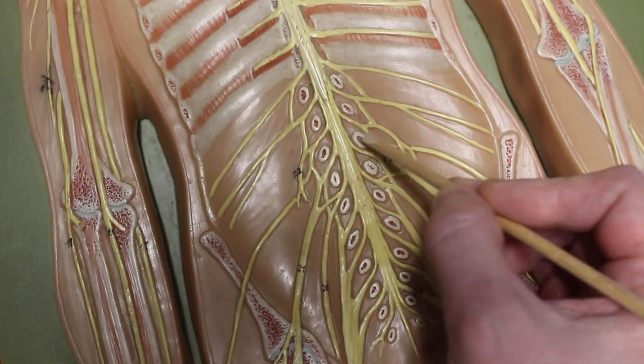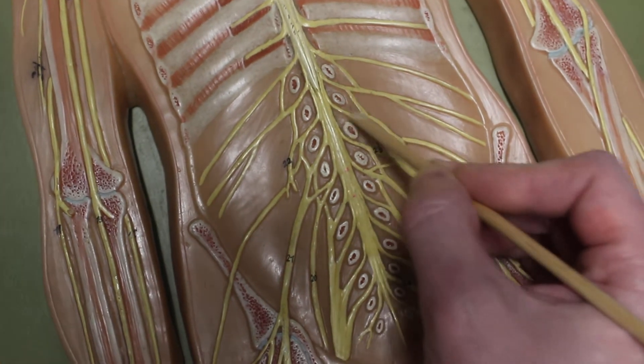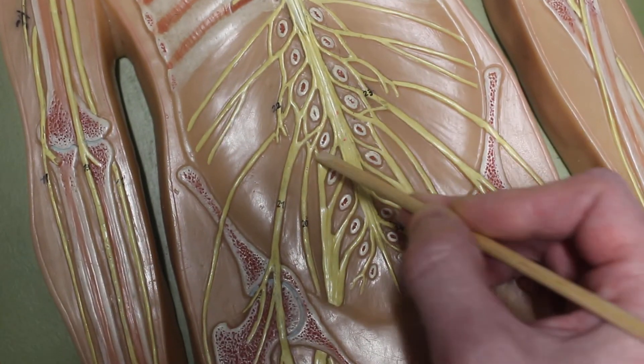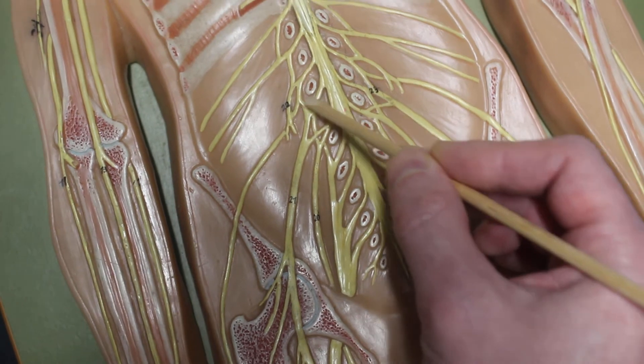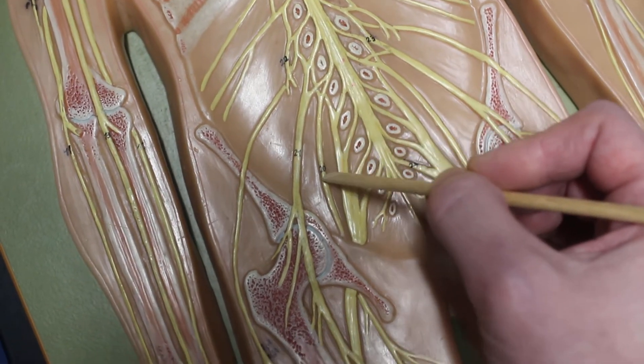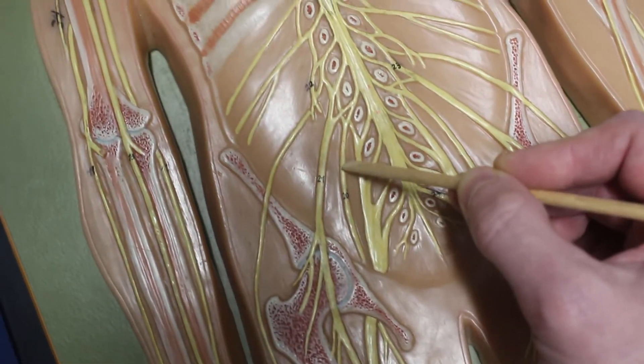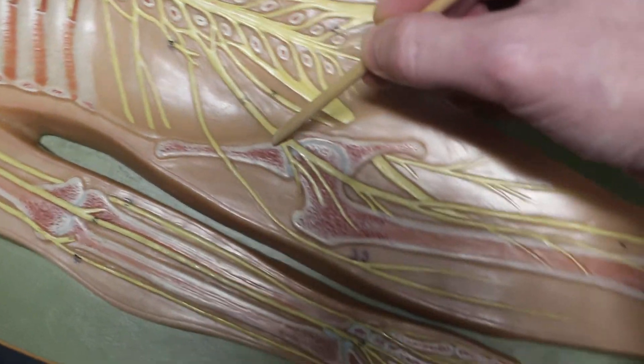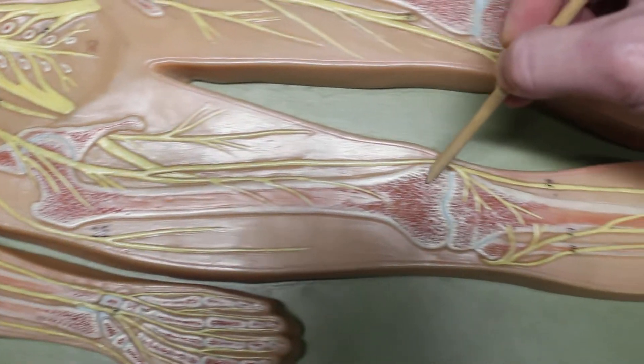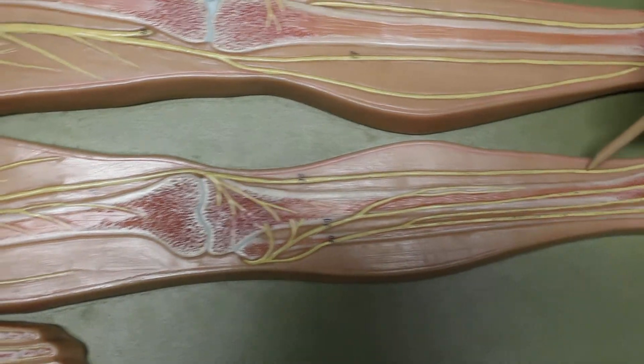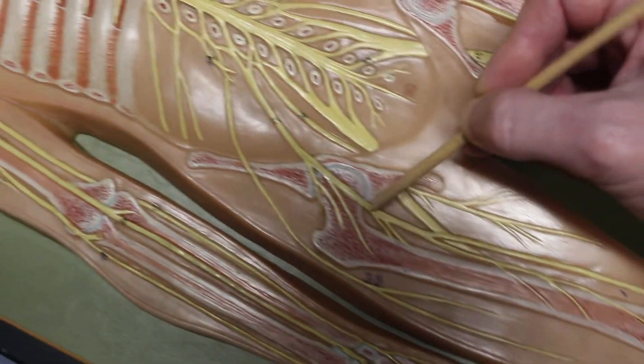Then down in the lumbar region, these are the lumbar nerves. Lumbar nerves lead to the lumbar plexus. Coming off the lumbar plexus, we have the obturator nerve. So here is the obturator nerve, and then this is the femoral nerve going down the length of the leg. So again, that is the femoral nerve.